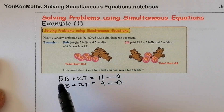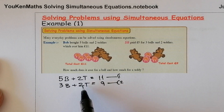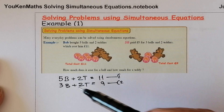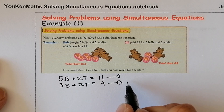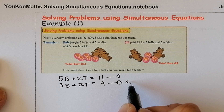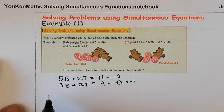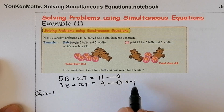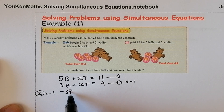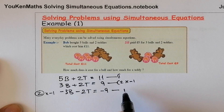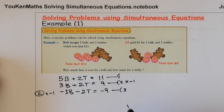Labelling them up as 1 and 2. I can see that the 2s are lined up — I've got a positive 2T and a positive 2T. But remember, we're trying to get a positive and a negative. So I'm going to multiply equation number 2 by negative 1. That will give me negative 3B, minus 2T, and minus 9. I'll rename that as equation number 3.